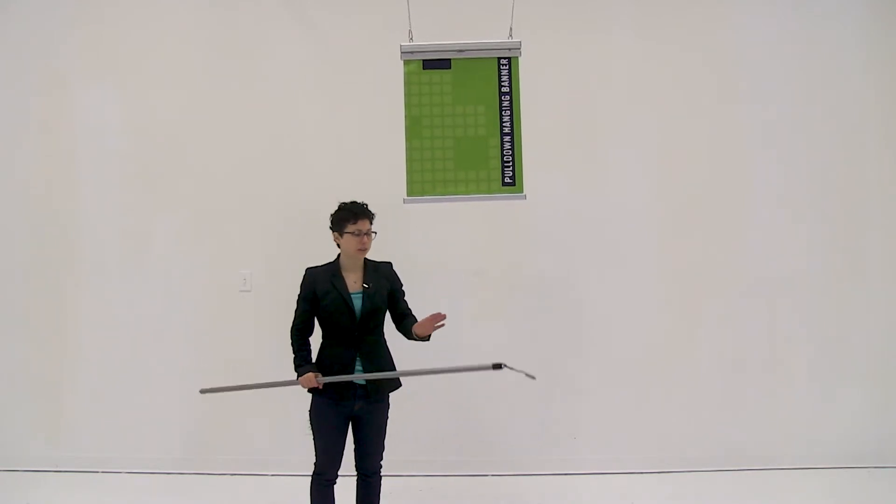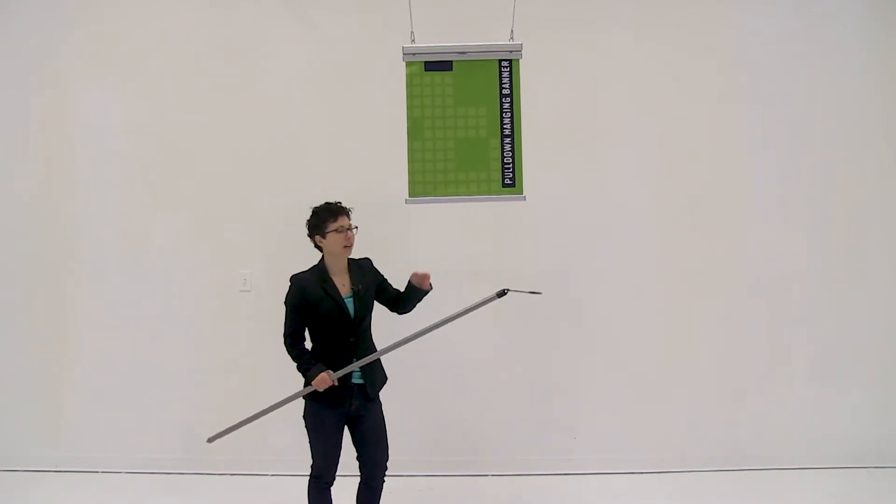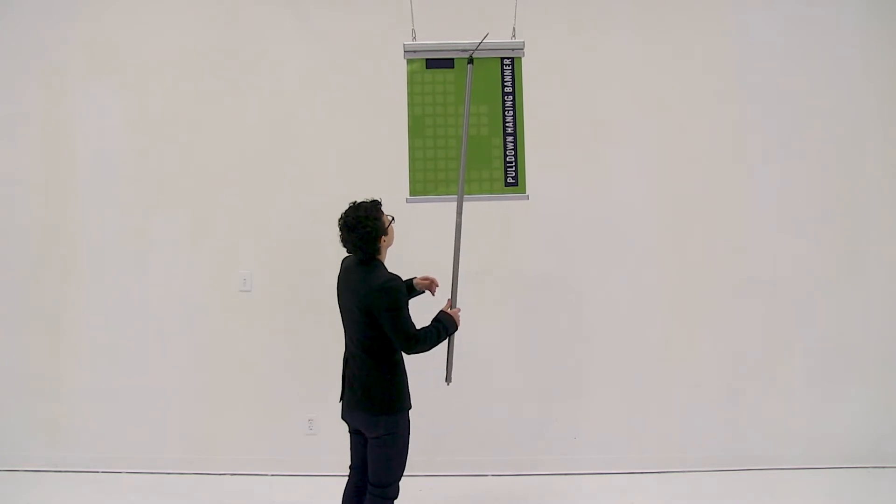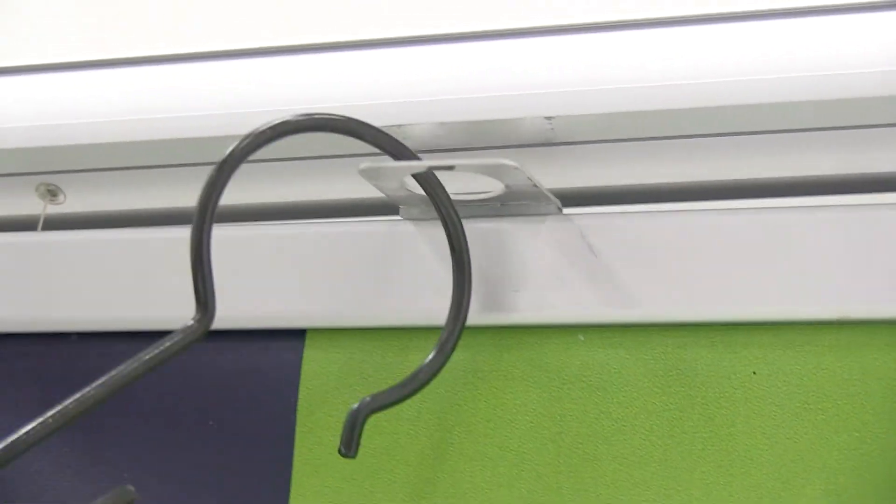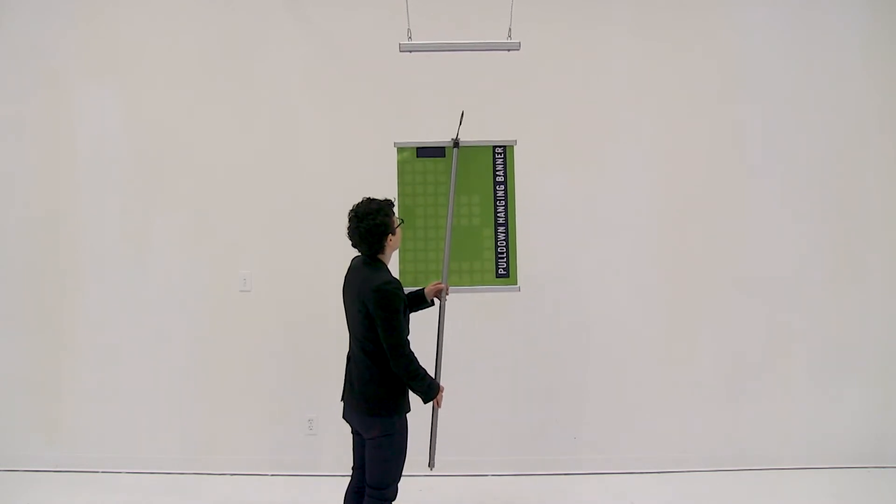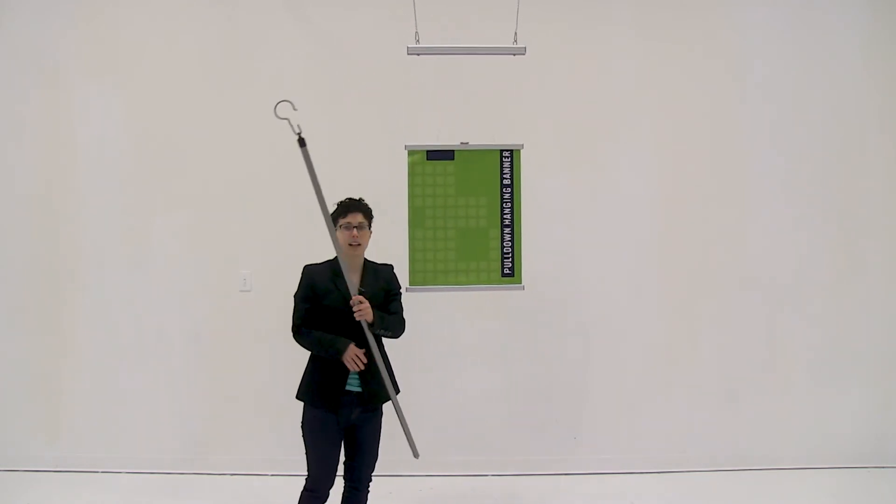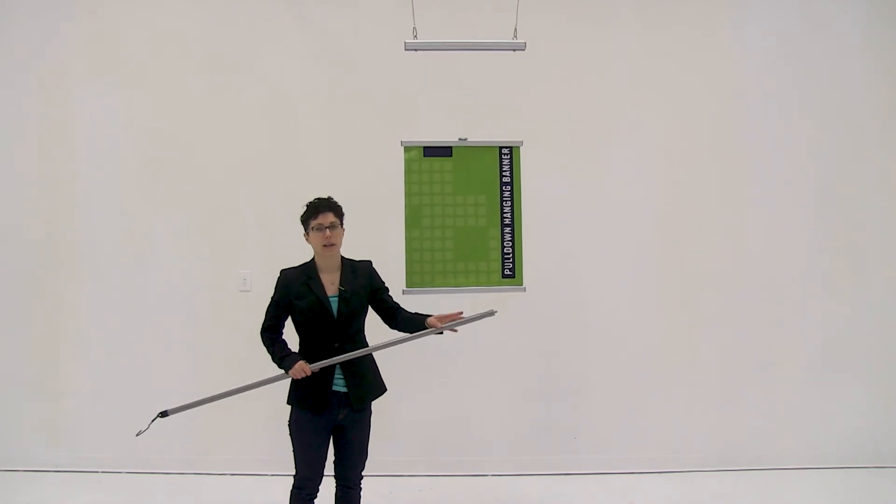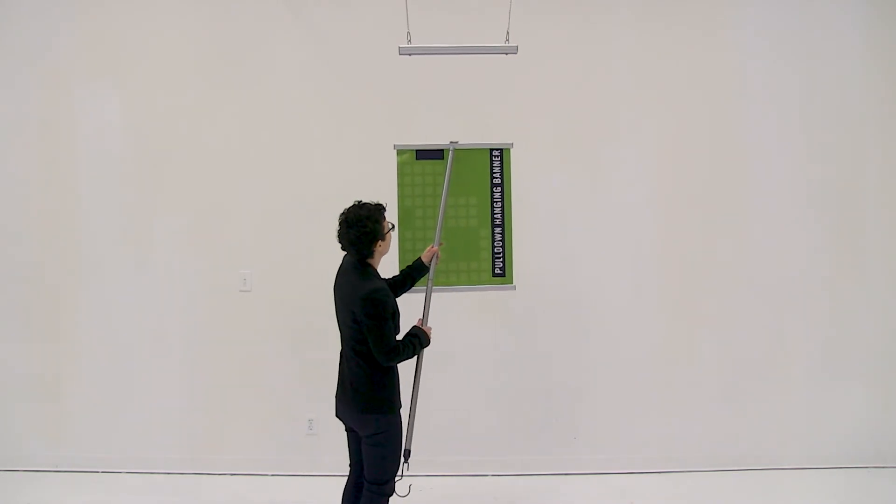Once you have the banner installed, you can use the pole and hook to adjust the height. I'm just going to hook into the loop on the top of the display and pull it down. I can also use the other end of my pole to push the banner back up.